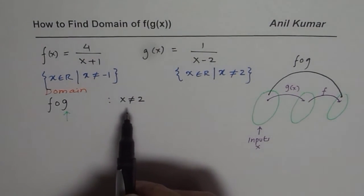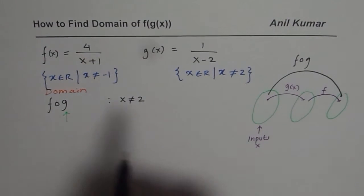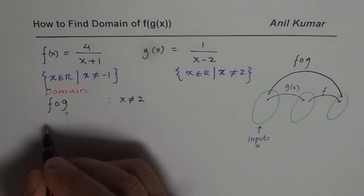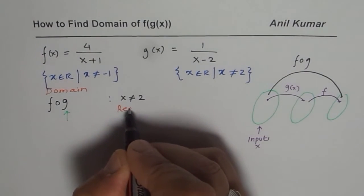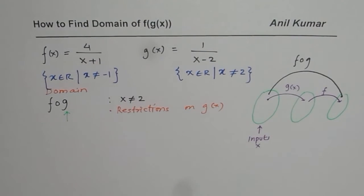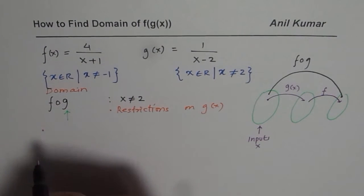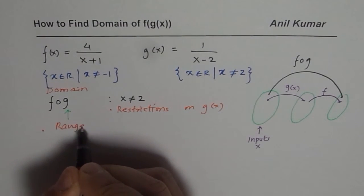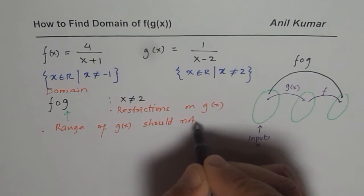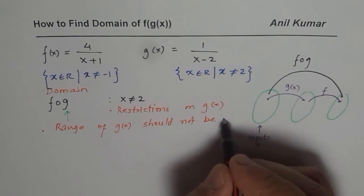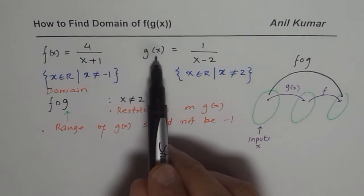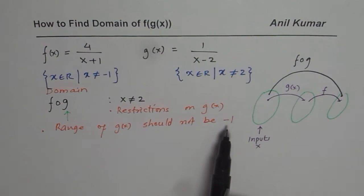The second domain restriction is that the range of g(x) should not equal -1, because -1 is the restriction on f(x). So we need to find the value of x that gives an output of g(x) equal to -1, and exclude that value. Let's solve for that.